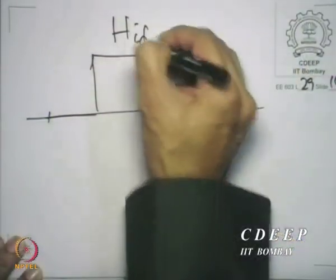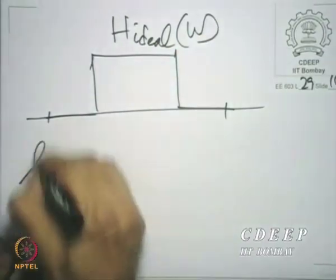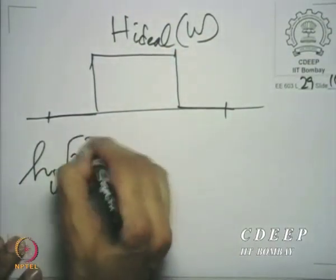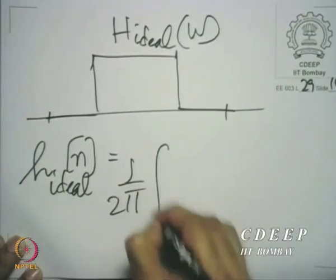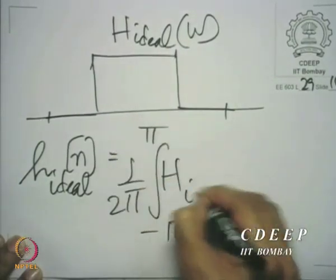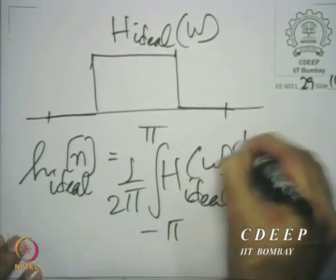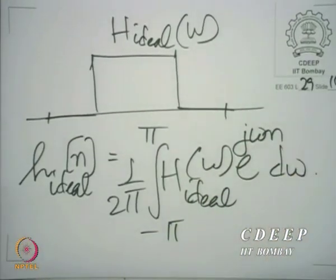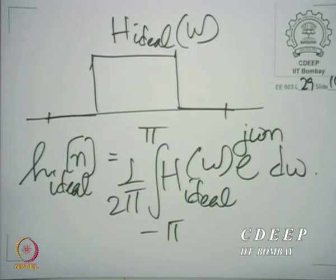Think for a minute. If h_ideal(omega) is the frequency response, then the impulse response h_ideal(n) is (1/2pi) times the integral from minus pi to pi of h_ideal(omega) e^{j*omega*n} d_omega. So effectively, these are like the Fourier series coefficients of this periodic DTFT on the variable omega. That is another perspective on the impulse response — it is like a Fourier series expansion of the periodic DTFT.